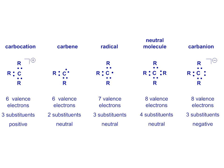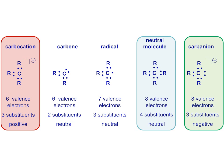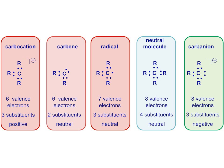Overall, this gives us a number of different possible electronic states at carbon, with different numbers of groups attached, different numbers of valence electrons, and different reactivity profiles. From the neutral molecule — tetravalent, eight valence electrons, neutral — to the carbocation with six valence electrons, three groups attached, and a positive charge. At the other end, the carbanion: also trivalent, but eight valence electrons at carbon and negatively charged. And then the carbene with six valence electrons and two substituents, and the radical with seven valence electrons and three substituents — both neutral, but both highly reactive.